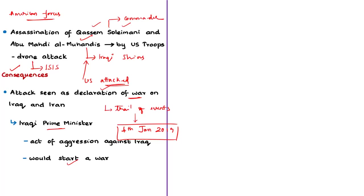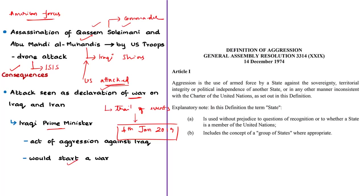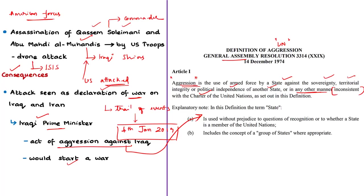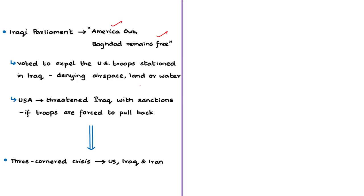This can be seen in the context of a resolution adopted by the UN General Assembly, which defines aggression as the use of armed forces by a state against the sovereignty, territorial integrity, or political independence of another state, or in any manner inconsistent with the UN Charter. As a result, the Iraqi parliament demanded America out. The Iraqi parliament voted to expel thousands of US troops stationed in Iraq and decided to deny those troops access to Iraq's airspace, land, or water.